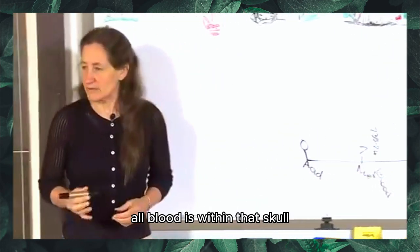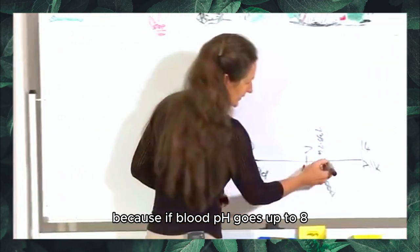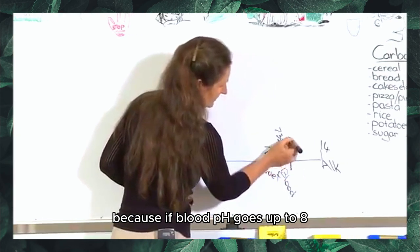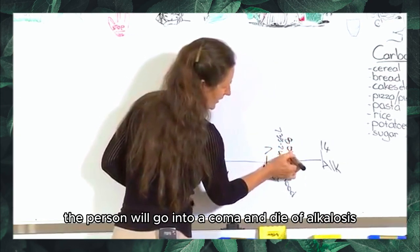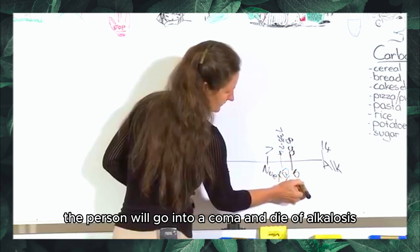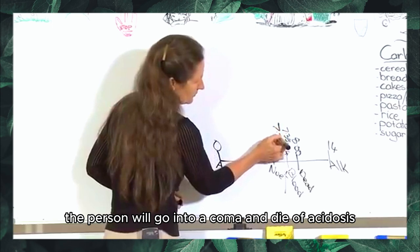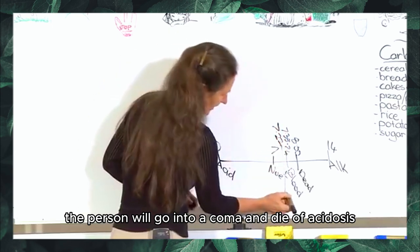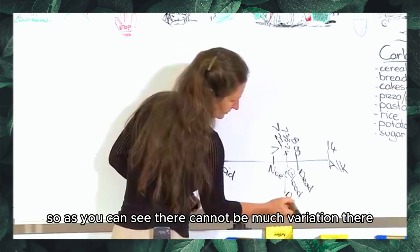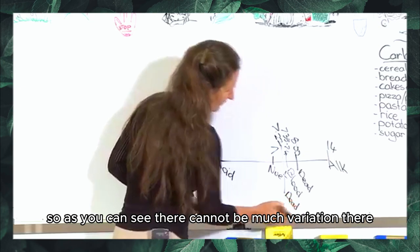All blood is within that scale because if blood pH goes up to 8 the person will go into a coma and die of alkalosis. If blood pH drops down to 7.22 the person will go into a coma and die of acidosis. As you can see there cannot be much variation there.